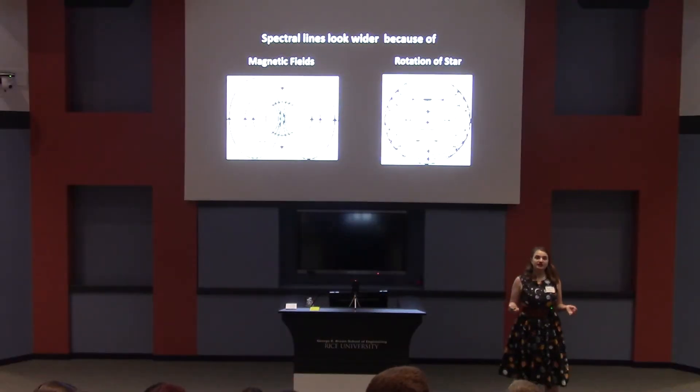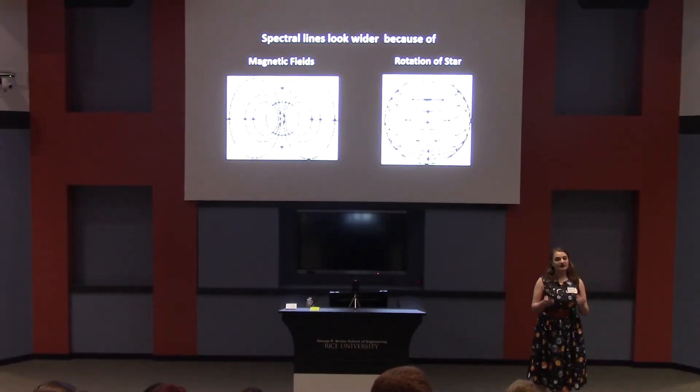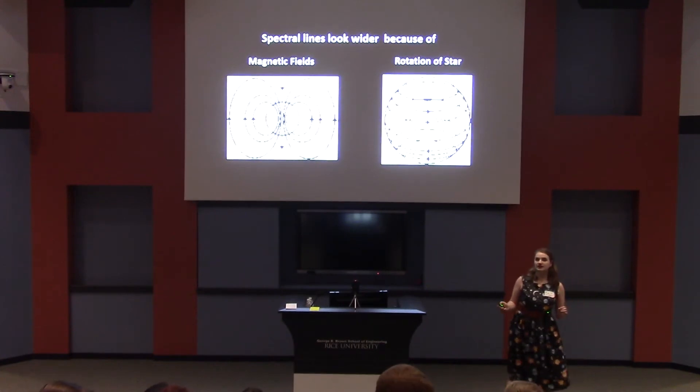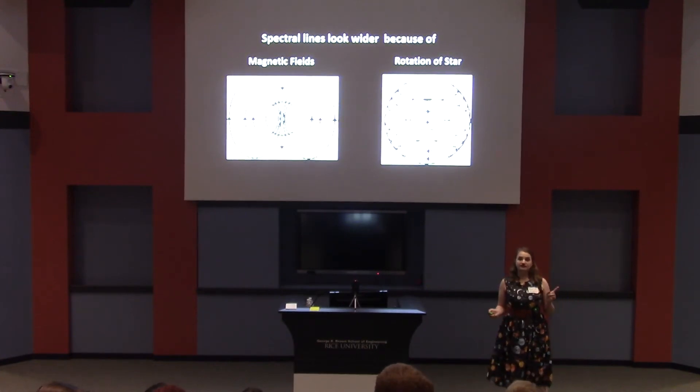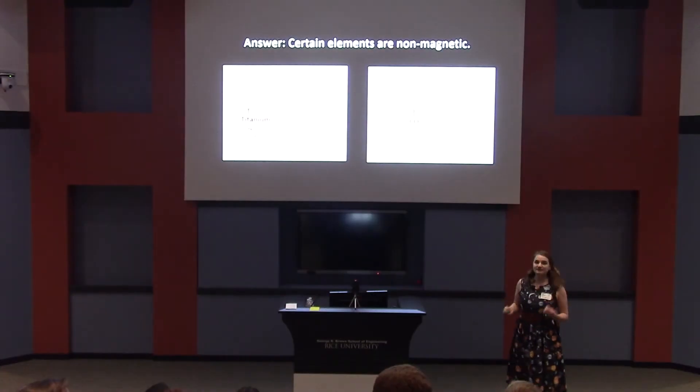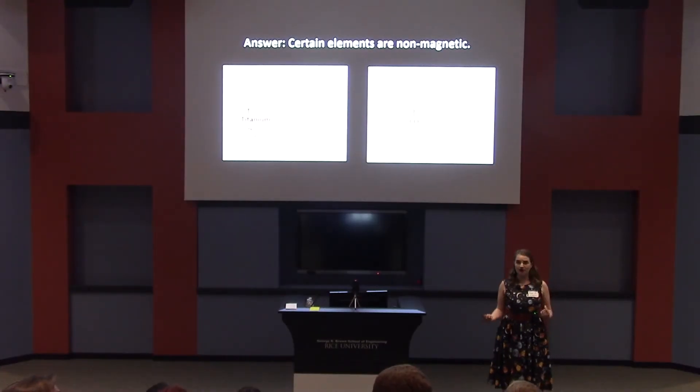In particular, spectral lines can be widened for two main reasons — there are others, but these are the biggest ones. First of all, there can be a magnetic field, which due to quantum effects causes the line to get broader. And also, the star can be rotating, and the faster it rotates, the broader that line will look. This is great news — now we have a method to go about measuring these magnetic fields. The problem is, how do we tell these two causes apart?